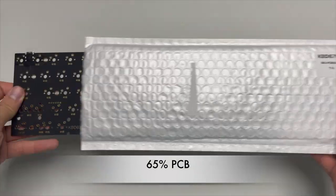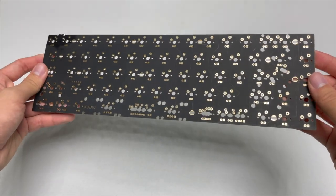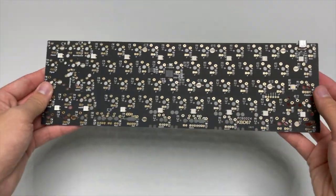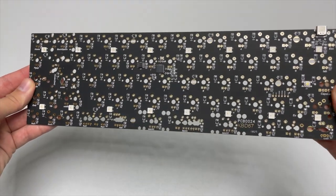Next up is the PCB. Although this won't be visible, it has a gorgeous black and gold color scheme which matches the theme of this keyboard. This isn't hot swap, so we'll have to do some soldering later.